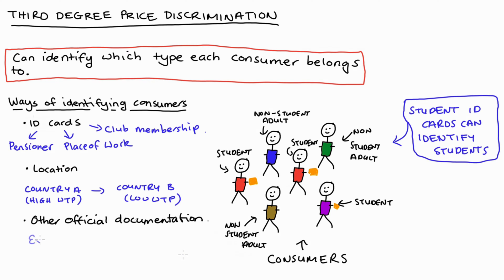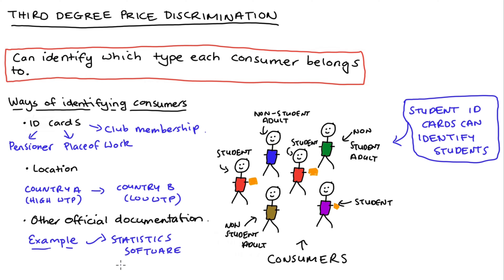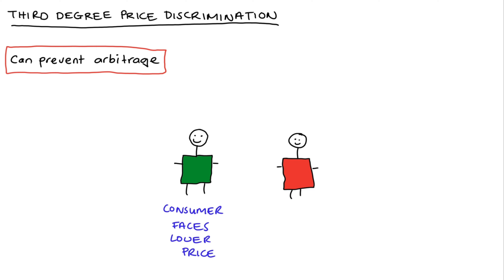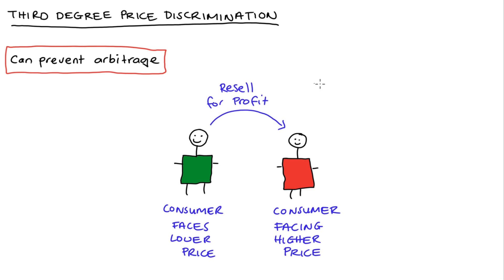I remember when I was studying, I got access to a cheaper version of statistical software — Stata. I did have to provide evidence of my enrollment, and I did that via my institutional email. Now, even if we can identify all of our consumers properly into different types, the firm still faces the possibility that consumers facing the lower price could potentially resell what they buy to consumers facing the higher price and do so at a profit.